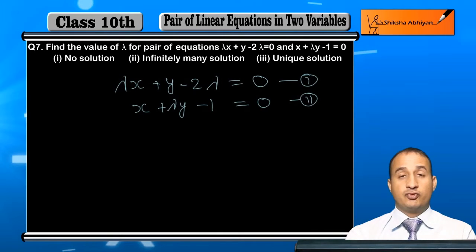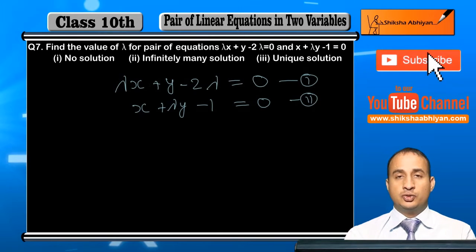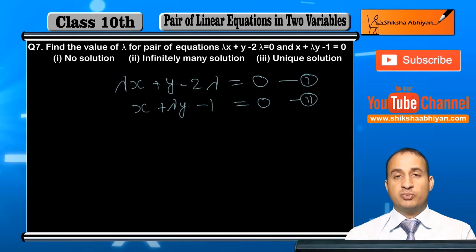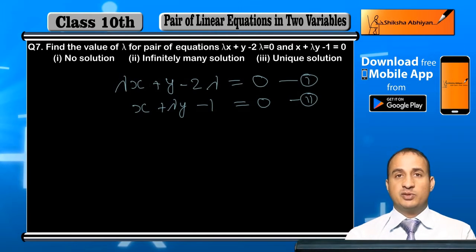For equations 1 and 2, the conditions are: unique solution, no solution, and infinitely many solutions. To analyze these, I will identify the values a1, b1, c1 and a2, b2, c2 from the equations.